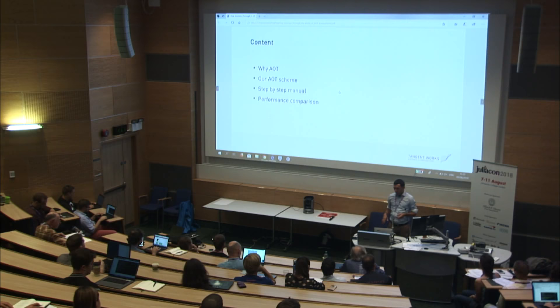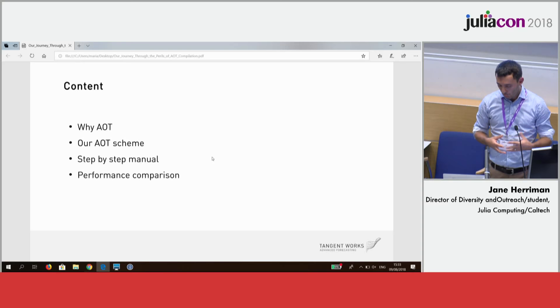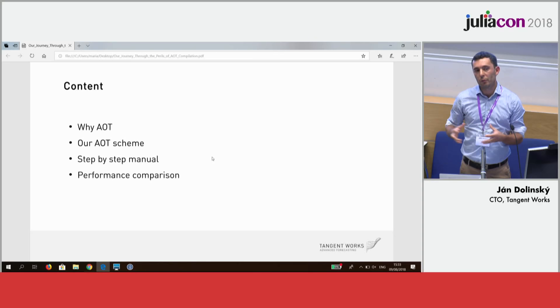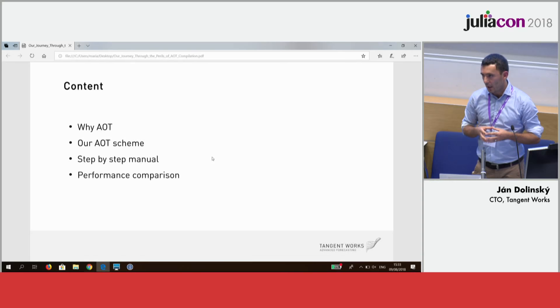Let me start by explaining why we needed AOT in our company as a product company, why it was important, and then I will walk you through our AOT schemes, some challenges we went through, step-by-step manual performance comparisons. We also developed our product in C++ before, so I can give you some comparisons between the JIT version and AOT runtime, and also the C++ runtime. We also prepared a GitHub repository where you can basically try everything out.